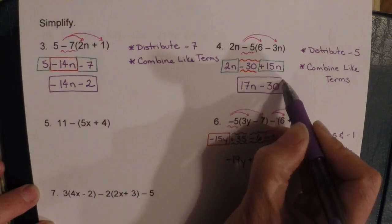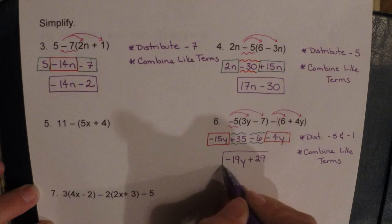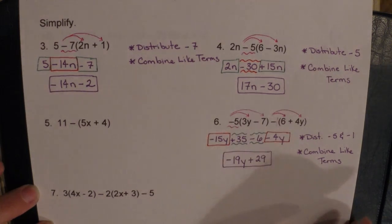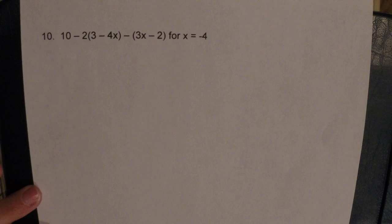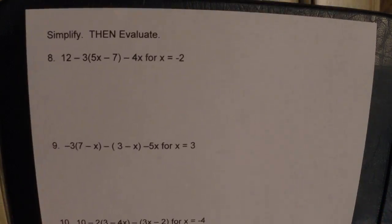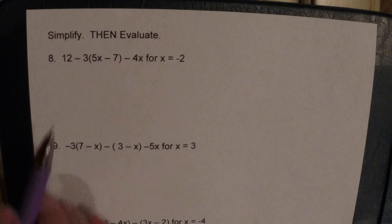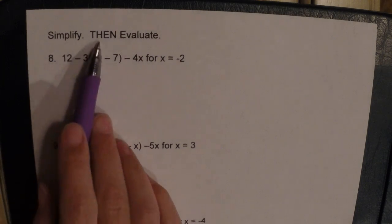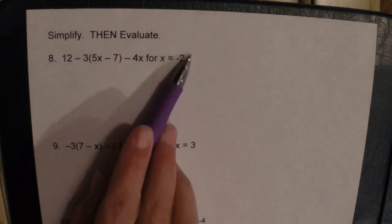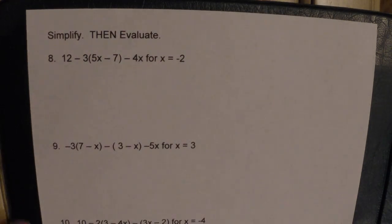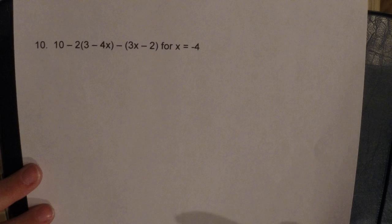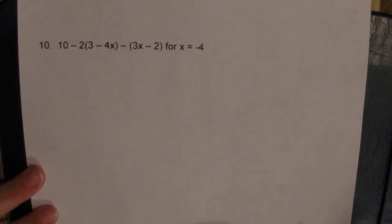Those are your answers for that type of problem — you should be able to work the other two. Let's flip over and look at the back. On the back, they want you to combine both steps: simplify first, then evaluate for whatever value they give you. I'm going to do the hard one, number ten, and then you can go back and do eight and nine.